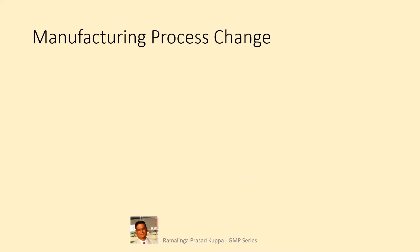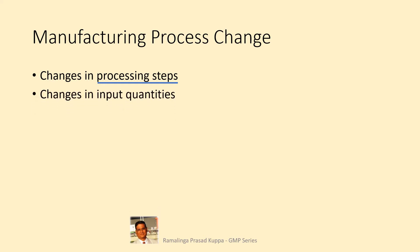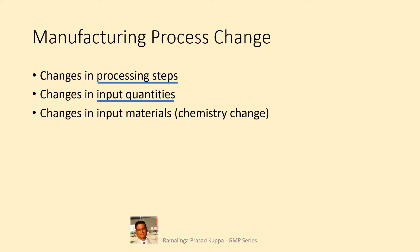Manufacturing process change. Basically, process change involves the following: change in processing steps, changes from the approved process steps, changes in input quantities — which may be minor or major — and changes in input materials.